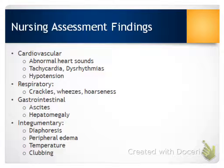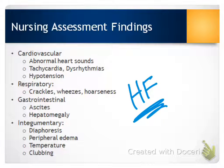Patients with valve problems often experience heart failure symptoms, because problems with forward or backward blood flow can cause respiratory issues such as crackles, wheezes, or hoarseness. Fluid volume overload can cause ascites and hepatomegaly. Skin findings include diaphoresis from decreased cardiac output, peripheral edema from fluid excess, temperature changes, and clubbing due to chronic hypoxia from abnormal heart rhythms, heart failure, or fluid overload.